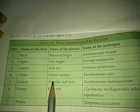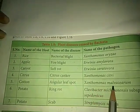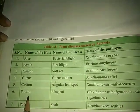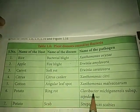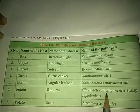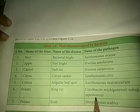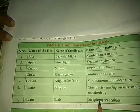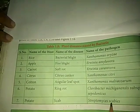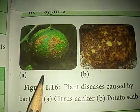Host — cotton, disease — angular leaf spot, pathogen — Xanthomonas malvacearum. Host — potato, disease — ring rot, pathogen — Clavibacter michiganensis subsp. sebidonicus. Host — potato, disease — scab, pathogen — Streptomyces scabies. Notable plant diseases caused by bacteria include citrus canker and potato scab.